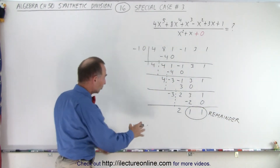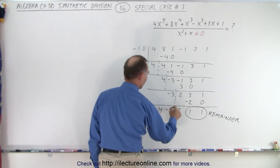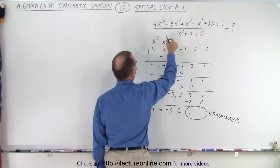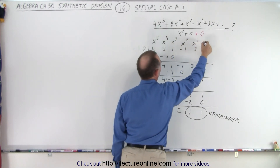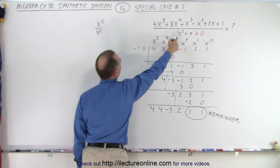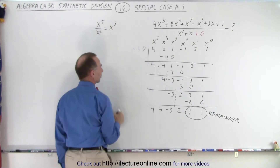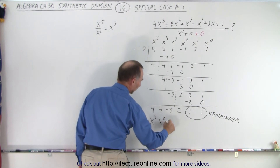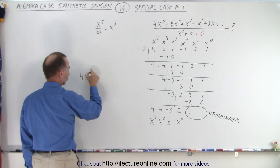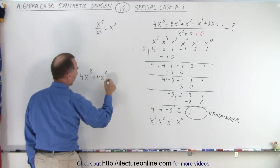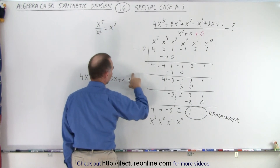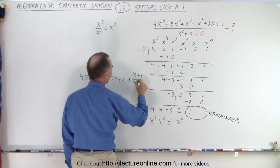Now we drop all the numbers down to the same line, and we have a 4, a 4, a negative 3, and a 2. What does that mean? Well, when we go to the numerator, we know that this represents x to the 5th, x to the 4th, x cubed, x squared, x to the 1st, and x to the 0. We took x to the 5th in the numerator and divided by x squared in the denominator, which means the first term should be x cubed. So the answer looks like 4x cubed plus 4x squared minus 3x plus 2, with a remainder of x plus 1 over x squared plus x.